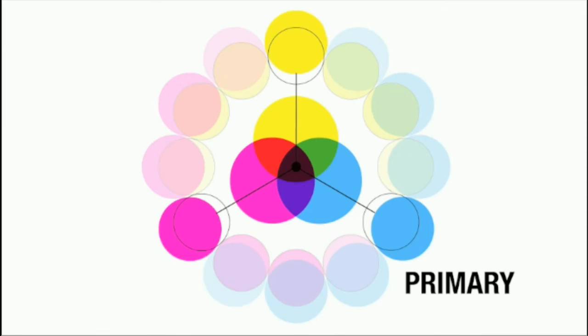The three primary hues are called magenta, yellow, and cyan. Notice each of the primaries consist of just one pure hue.